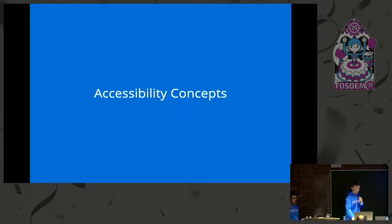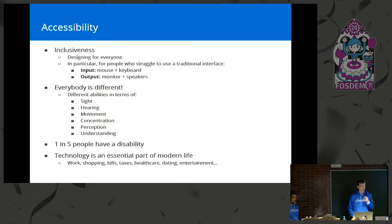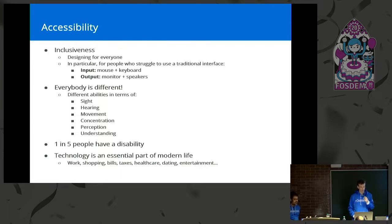So now we'll talk about some general accessibility concepts. What is accessibility? It's basically inclusiveness — designing for everybody, in particular people who struggle with a traditional interface of a mouse, keyboard, monitor, and speakers. Because everybody's different, we all have different abilities in terms of sight, hearing, or even movement. Some people might struggle to use a mouse or keyboard. And one in five people have a disability, so it's quite common.